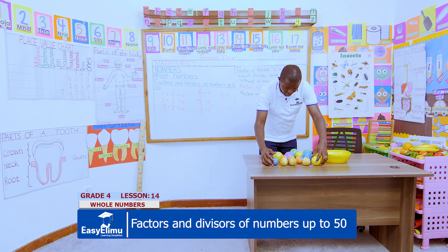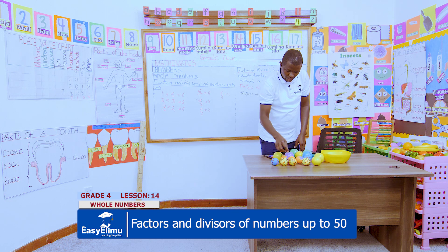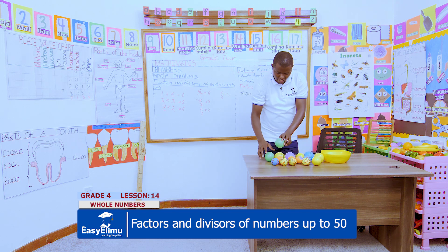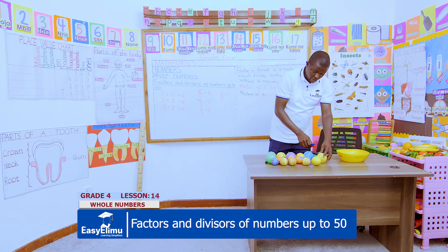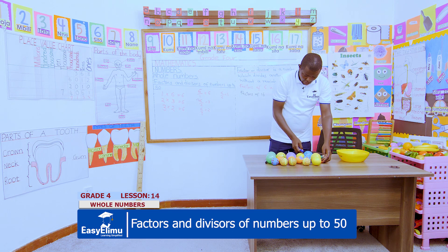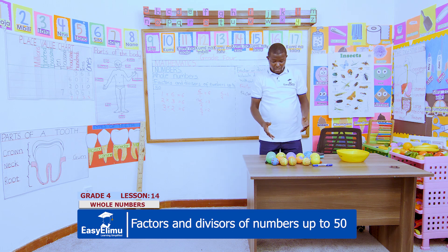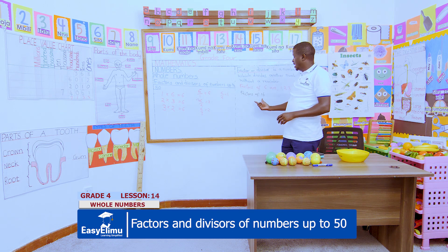We have said we have 16 of them. Let us count: one, two, three, four, five, six, seven, eight, nine, ten, eleven, twelve, thirteen, fourteen, fifteen, and sixteen. We want to arrange them so that we can come up with factors or divisors of 16 — numbers which when you divide or multiply by those numbers, you can divide number 16 without a remainder.